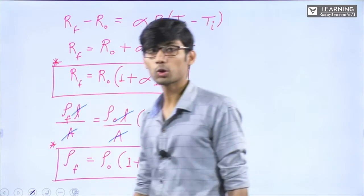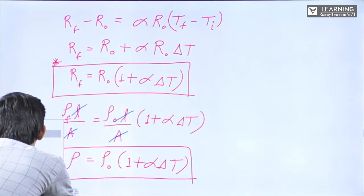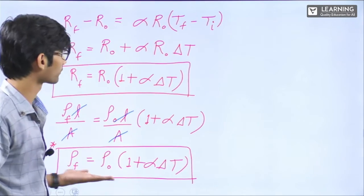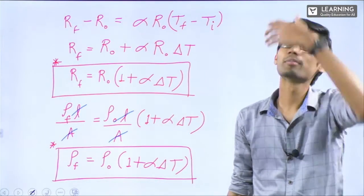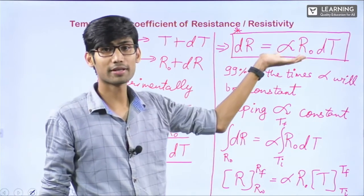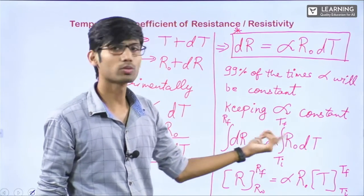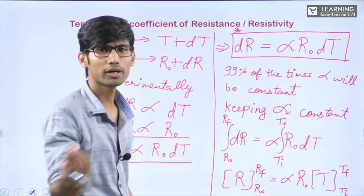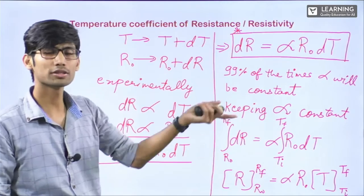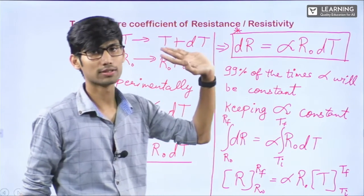Remember both forms — for resistance: R_f = R₀(1 + αΔT); for resistivity: ρ_f = ρ₀(1 + αΔT). For competition students, remember the integral form dR = αR₀dT, because if α is not constant, you integrate α(T) dT directly. Some people might wonder if L and A change with temperature due to thermal expansion — overall they cancel each other, and experimentally they don't impact much. Everything is taken into consideration before this formula was derived.